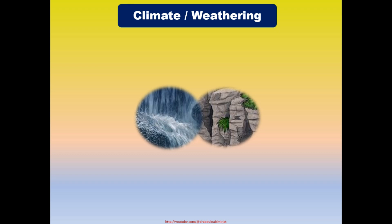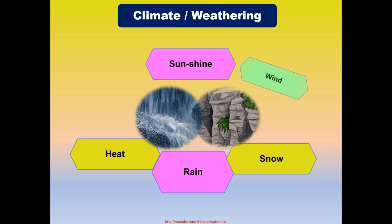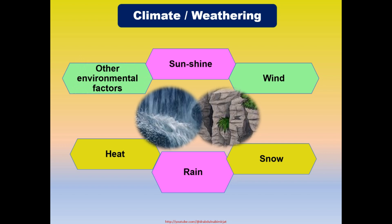Climate, or weathering, consists of heat, rain, snow, sunshine, wind, and other environmental factors.